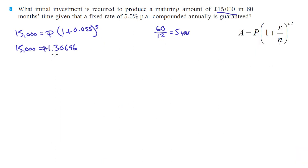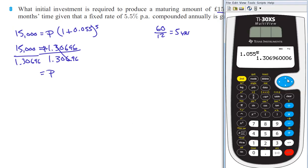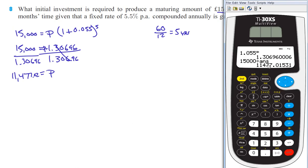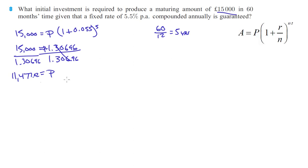And that is P times 1.30696. We know it's going to be about 130.696% of the original value after five years. So we want to divide both sides by 1.30696. We take 15,000 and divide it by our answer, and we get 11,477.02. So we're going to need to invest 11,477 pounds in order to end up with 15,000 pounds at the end of five years.